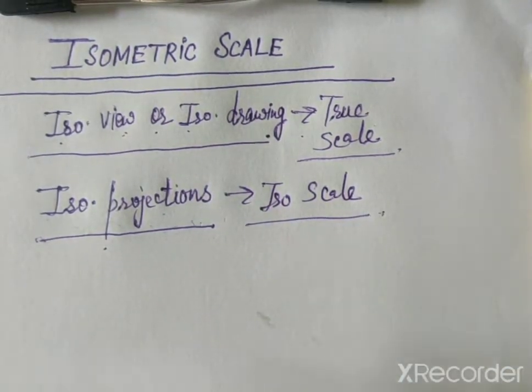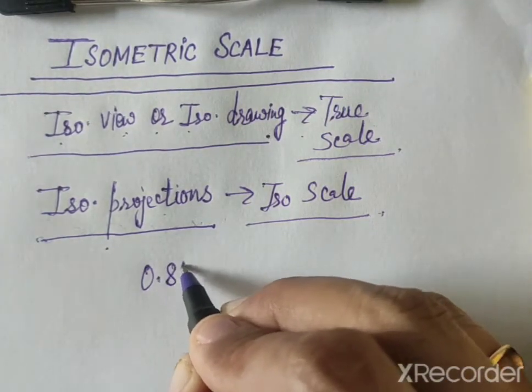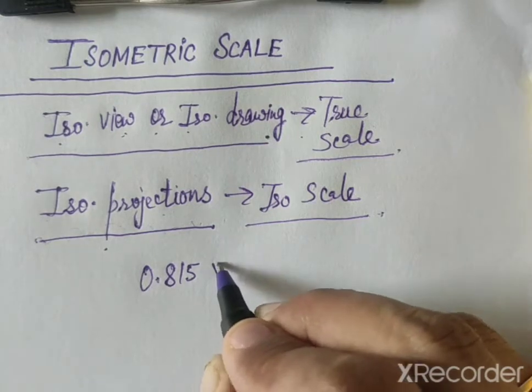So in the isometric scale, all the lengths are shortened to 0.815 of true length.